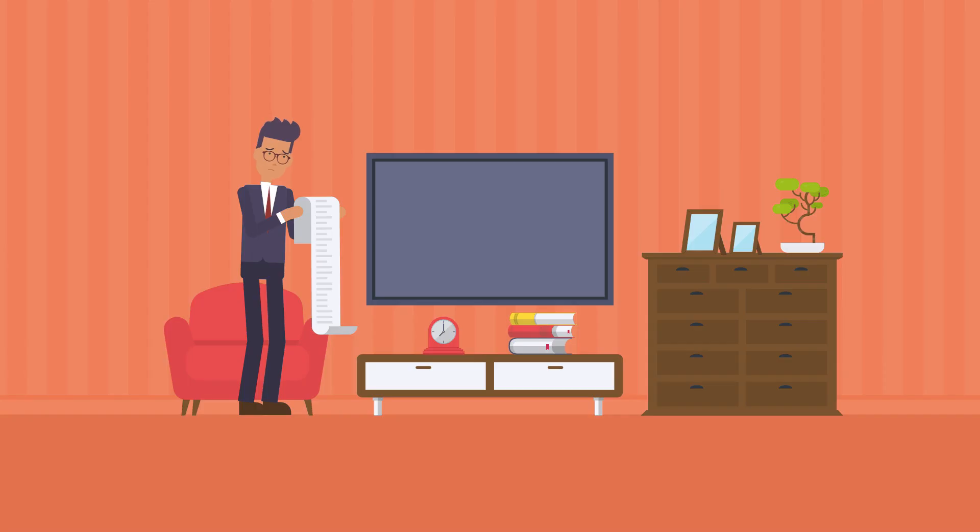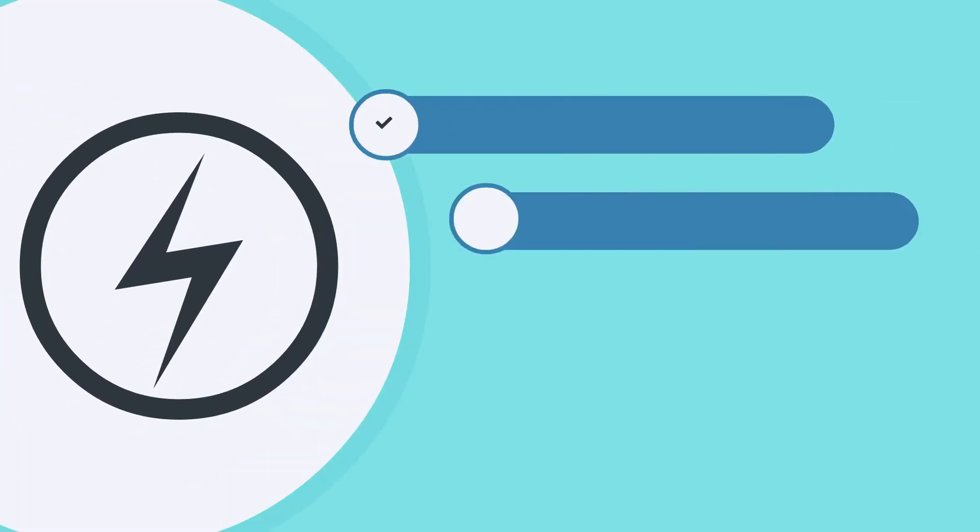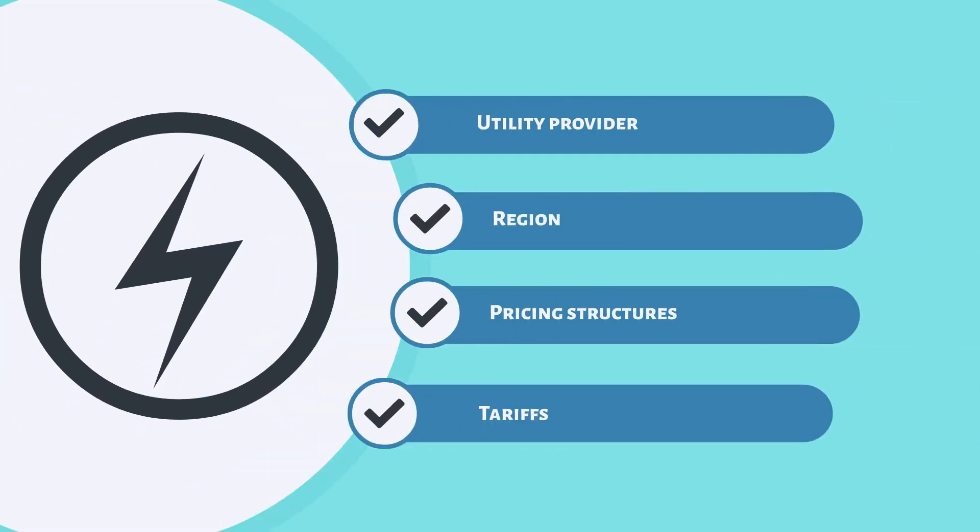An average electricity bill includes 30-70% of peak demand charges. The increase in peak demand rates depends on a variety of factors, which include utility provider, region, pricing structures, and tariffs.